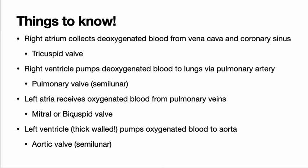So here's what you need to know: the right atrium collects deoxygenated blood; there's a tricuspid valve from the right atrium to the right ventricle; there's a semilunar valve at the pulmonary trunk; the left atria receives oxygenated blood from the pulmonary veins; there's a mitral or bicuspid or AV valve between the left atria and the left ventricle; and that oxygenated blood goes through a semilunar valve into the aorta in order to move out through the whole body.